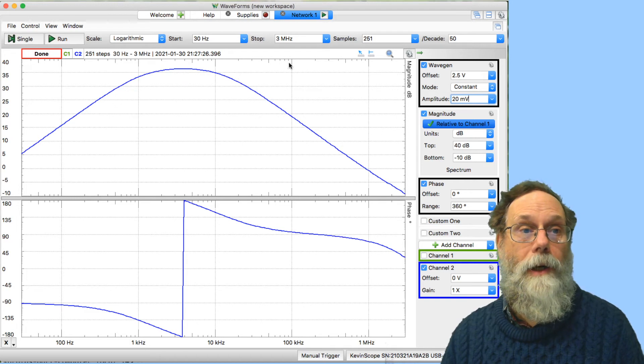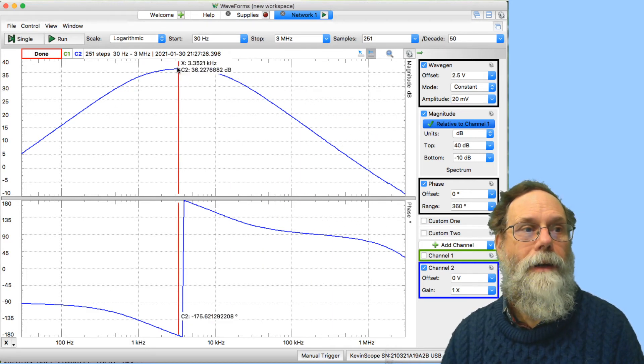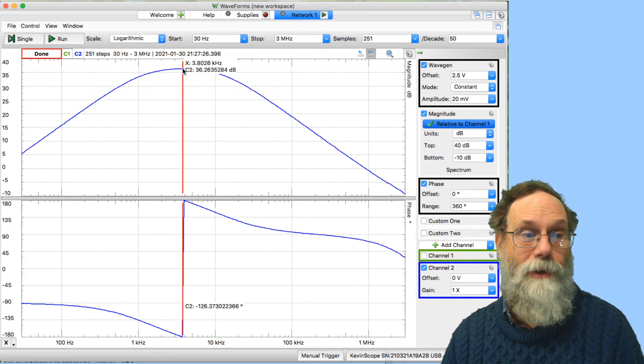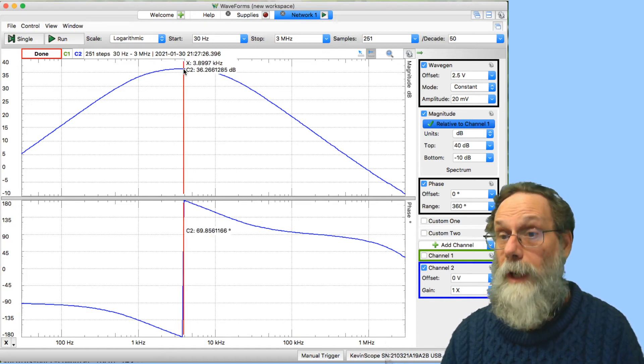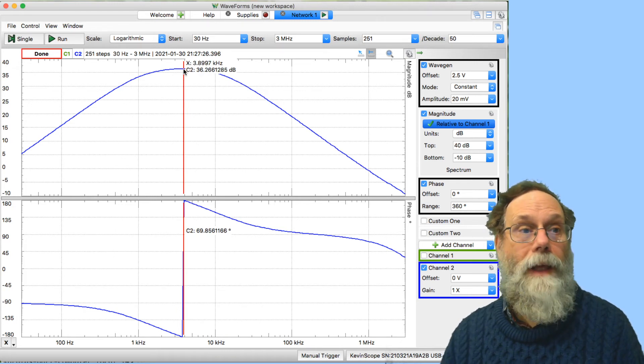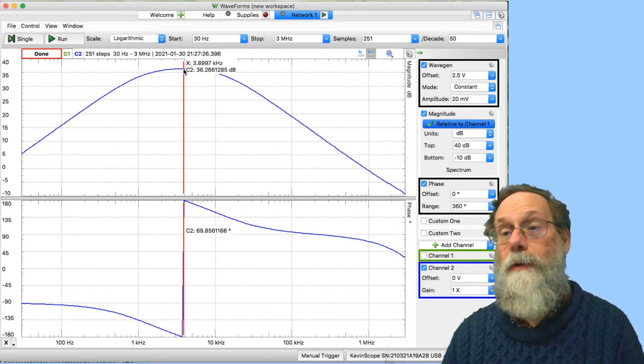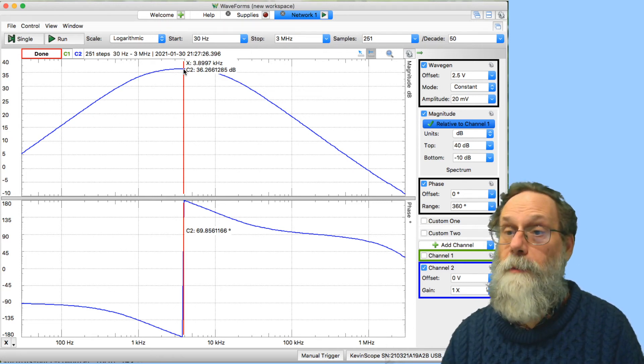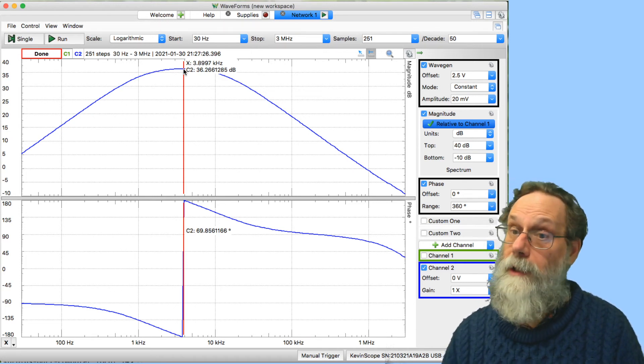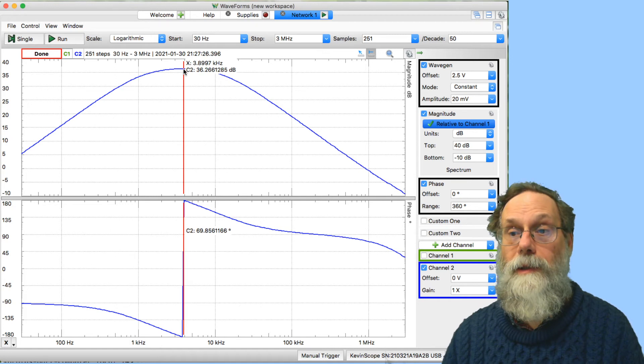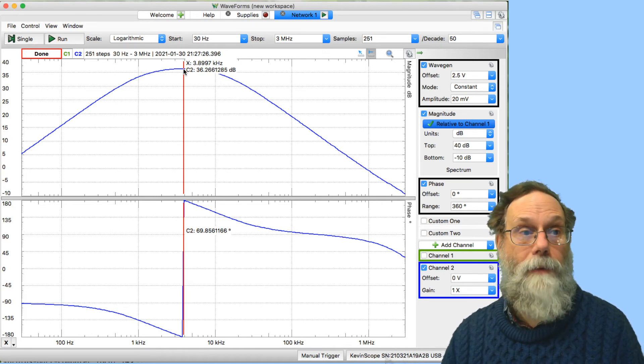The peak here, which is right where the phase goes through 180 degrees, because that's where we actually get a real gain, is 36.2627 dB. Pretty close to the 36.5 dB that we calculated it should be. But it doesn't stay there for very long because pretty soon we hit the low-pass limitations of the op-amp from the gain bandwidth product.